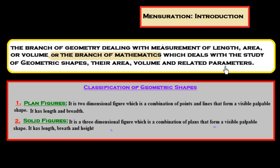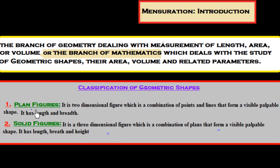In our real life we have seen so many objects surrounding us of different shapes — they all belong to mensuration or geometry. I would like to explain the classification of geometric shapes. We have classified them mainly in two ways: number one is plane figures, and number two is solid figures.